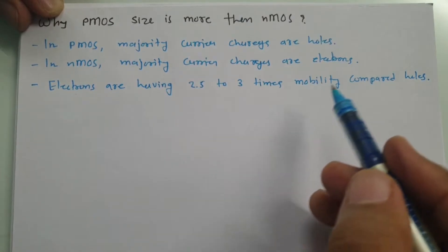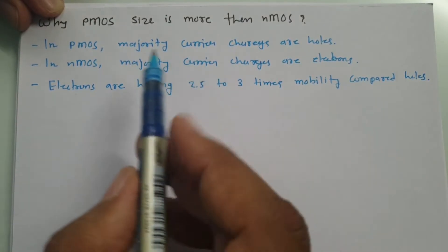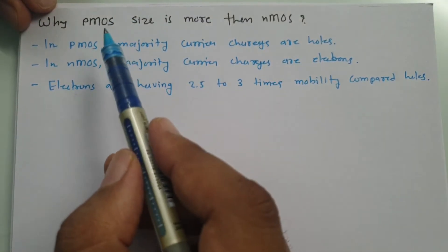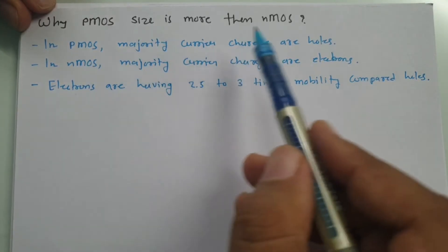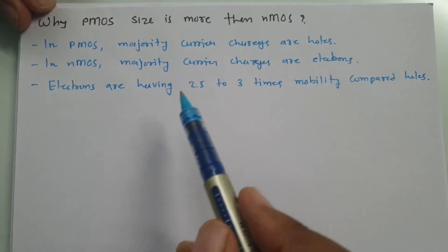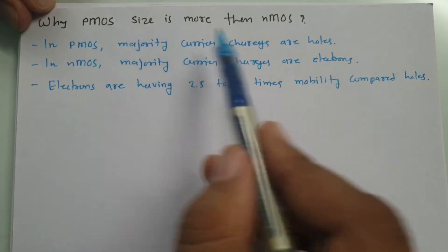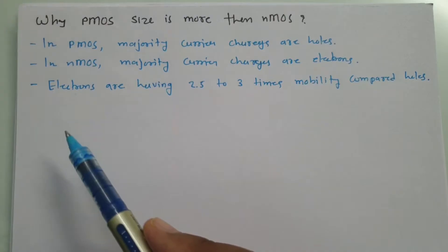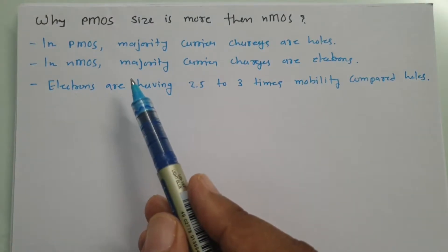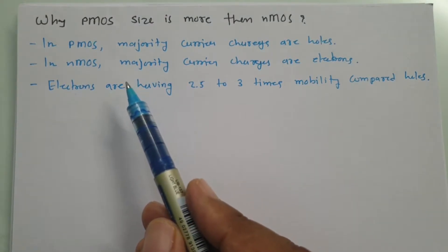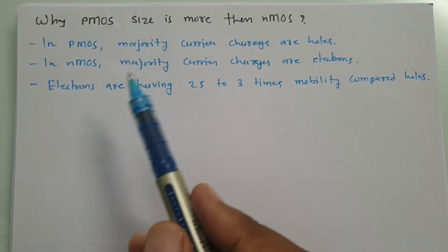Because electrons are having higher mobility compared to holes, you will be finding size of PMOS that is greater than NMOS. But I don't think up to this you are getting convinced like PMOS is having larger size. Even when I was there in engineering like you, I was not even convinced with this answer.